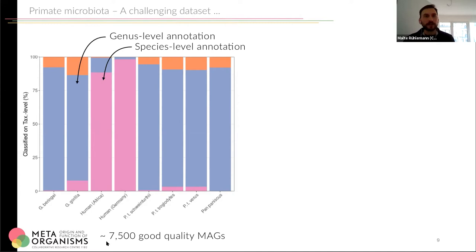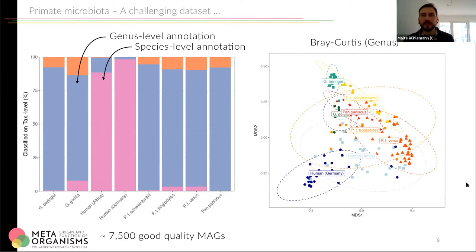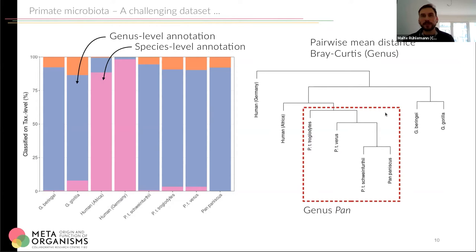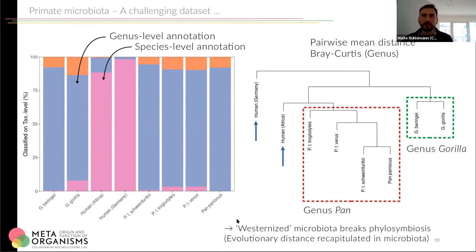Still, we were able to assemble good quality metagenome-assembled genomes from this dataset. Looking at these communities another way — performing median clustering of the different points — we see a clear subcluster of the Pan genus, so bonobos and all chimpanzees, and a clear subcluster of the gorilla species. But if you look at the humans, there is a big difference between the humans living in Germany and those living in Africa. The westernization we see in the German humans breaks this pattern of phylosymbiosis, where evolutionary distance is recapitulated in the microbiota, which is more visible in the humans living in Africa.